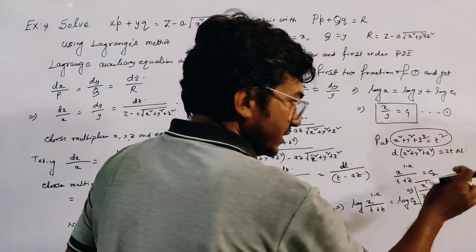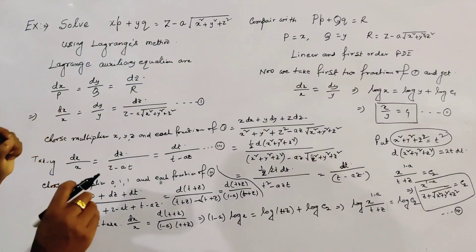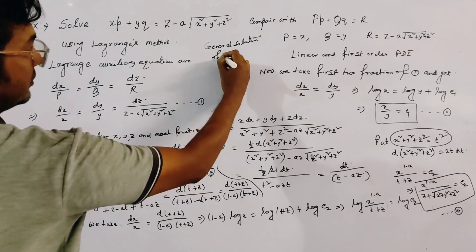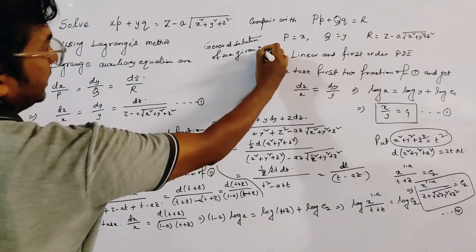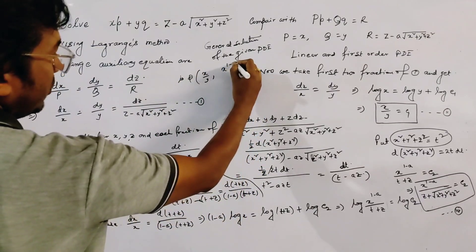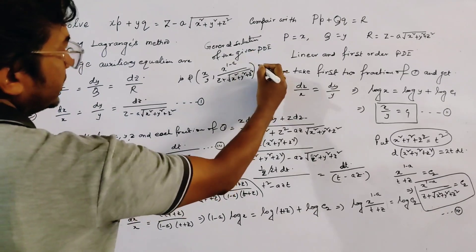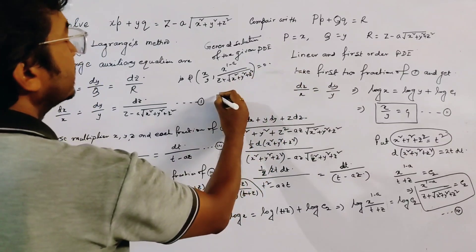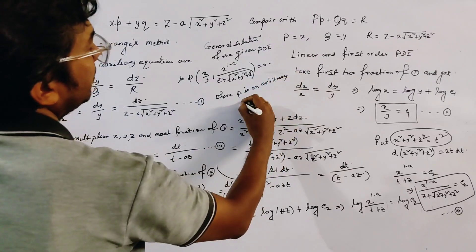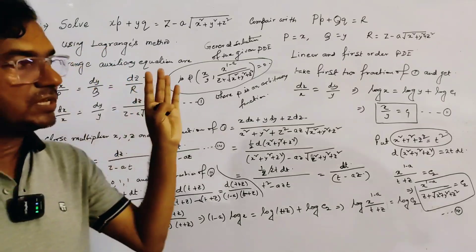From relation 2 and relation 4, the general solution of the given partial differential equation is: φ(x/y, x^(1-a) / (z + √(x²+y²+z²))) = 0, where φ is an arbitrary function. This is the general solution of the given partial differential equation. This is a very important and intellectual type of problem.